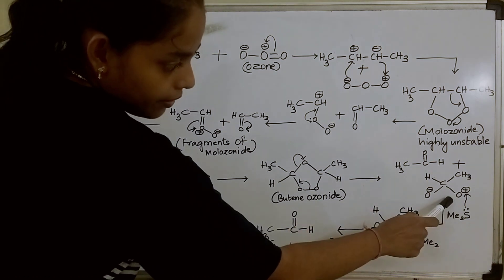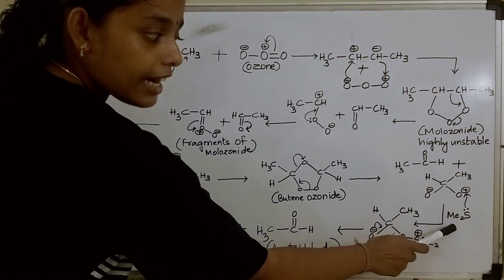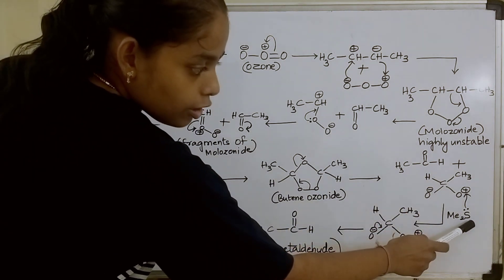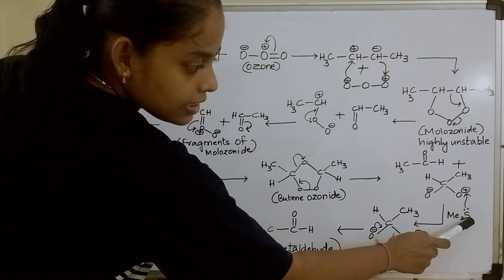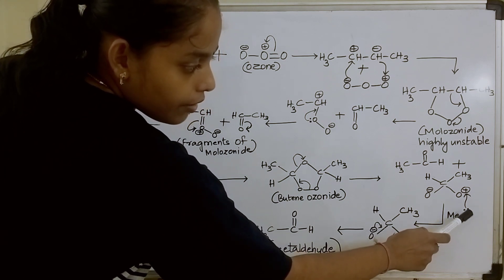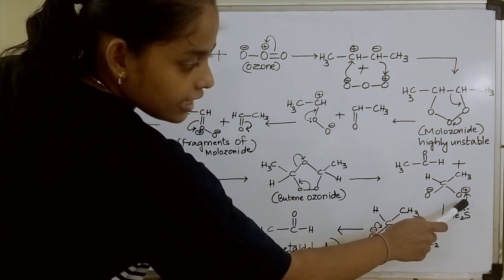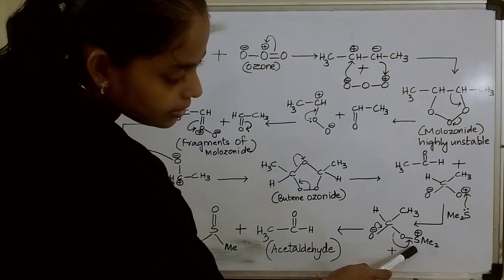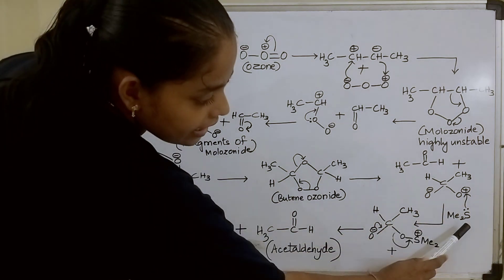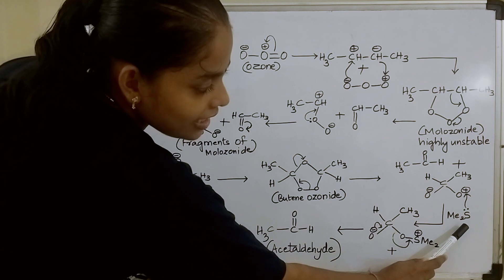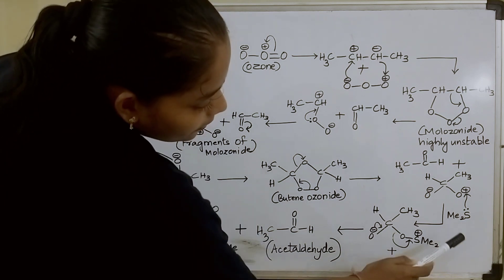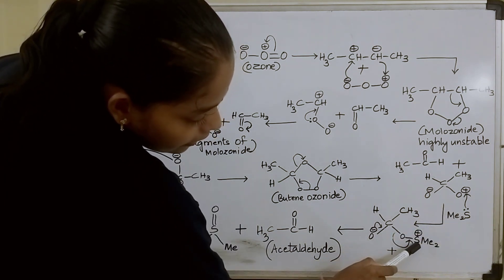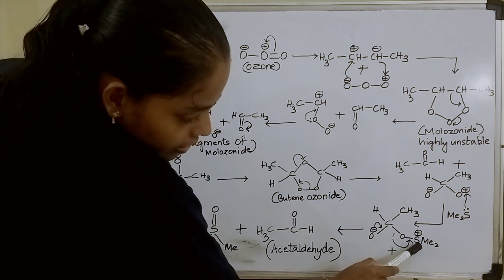Now this structure will again react with dimethyl sulphide. Here the lone pair of electrons present on the sulphur will form a bond with the positively charged oxygen and gives a structure like this. As sulphur is sharing its lone pair of electrons to the positively charged oxygen, sulphur is getting a positive charge.